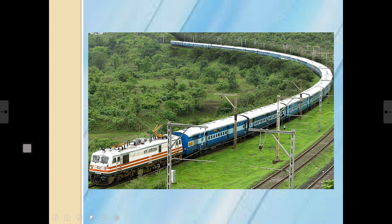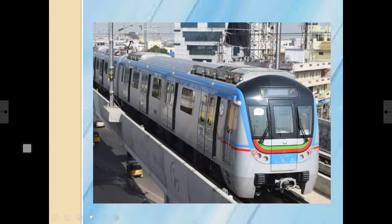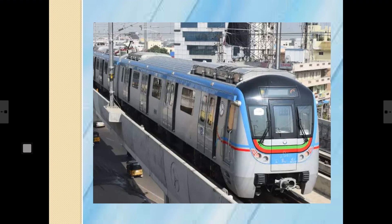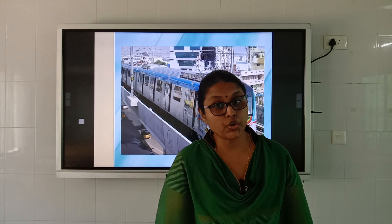Now, another form of land transport is the rail transport. This is a train. It runs on special rail tracks. Trains can carry a large number of people and goods at the same time from one place to another, and are suitable for long journeys. This is the metro — you must have traveled in one! It carries many people within the city limits.